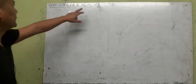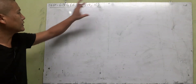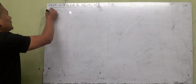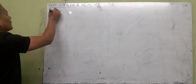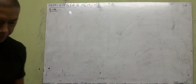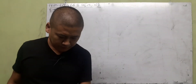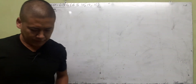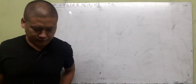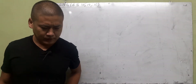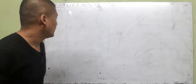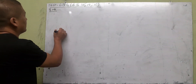In this class we'll do problems 15 and 16. Let us go to B15. A vertical pole of height 6 meters casts a shadow 4 meters long on the ground, and at the same time — that is important — a tower casts a shadow 28 meters long. Find the height of the tower.